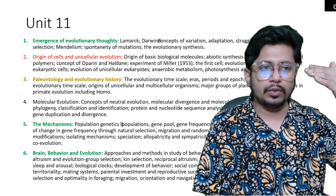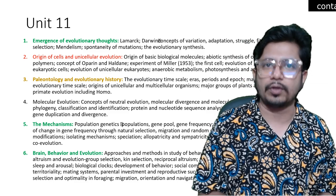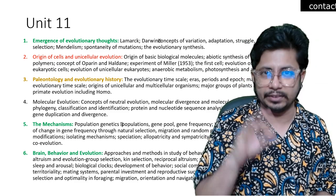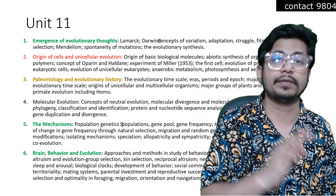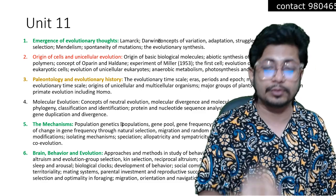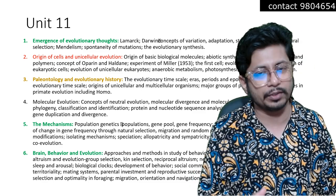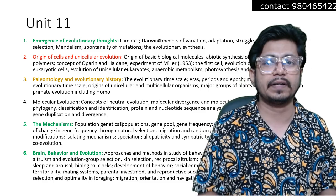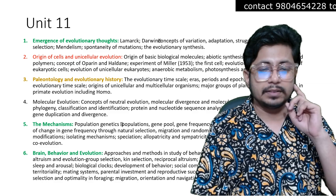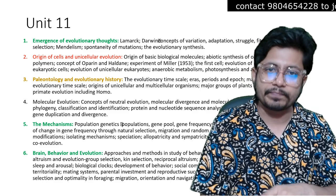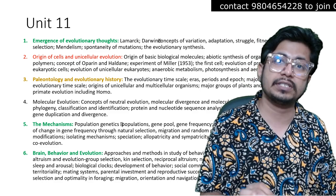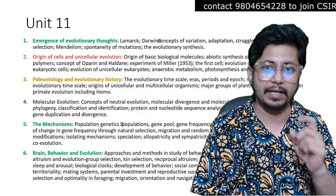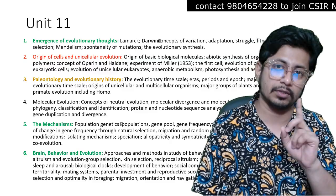Across all six different topic areas in Unit 11, the key focus areas are: evolutionary thought — particularly the difference between gradualism and punctuated equilibrium — the types of natural selection, the mechanisms involving population genetics, and the brain and behavior part. All of these are very important for the exam.